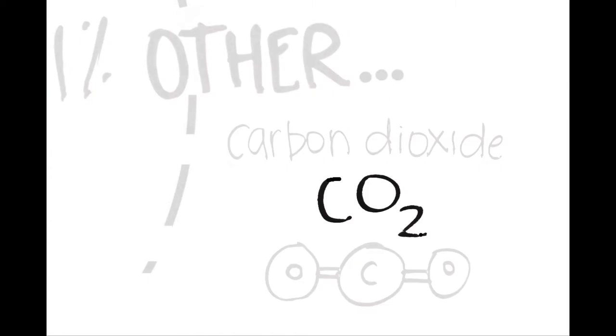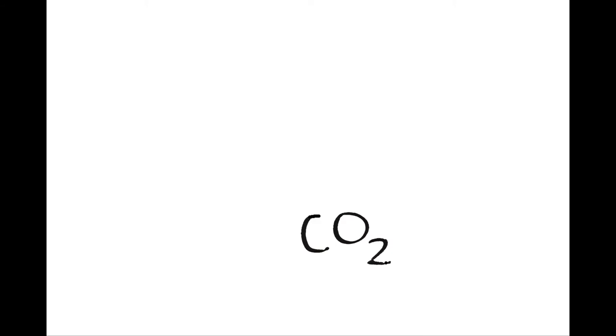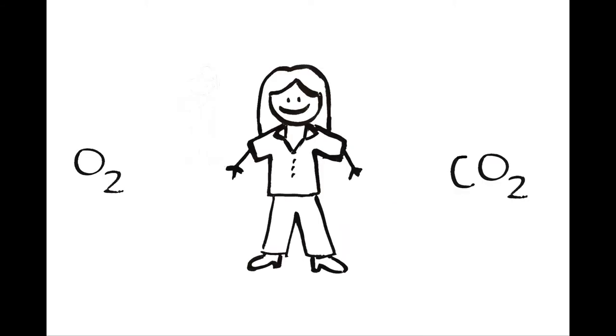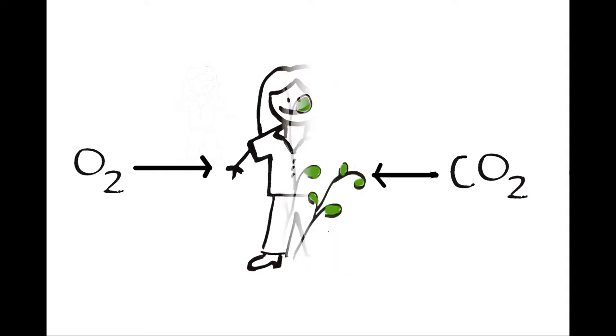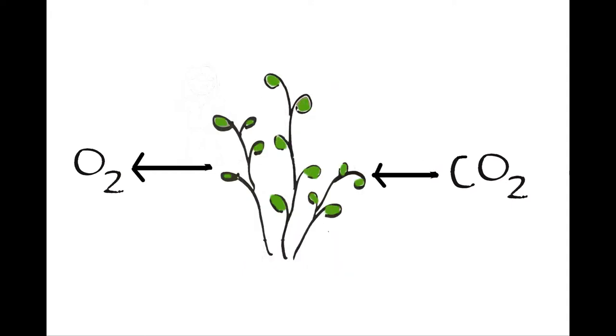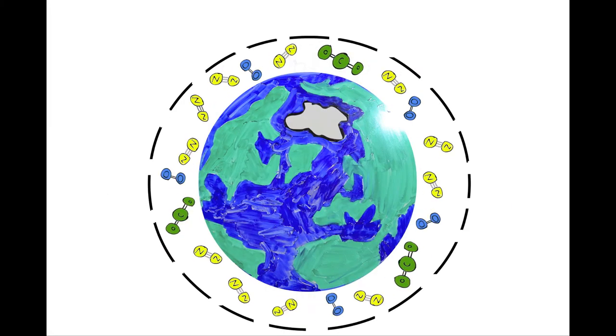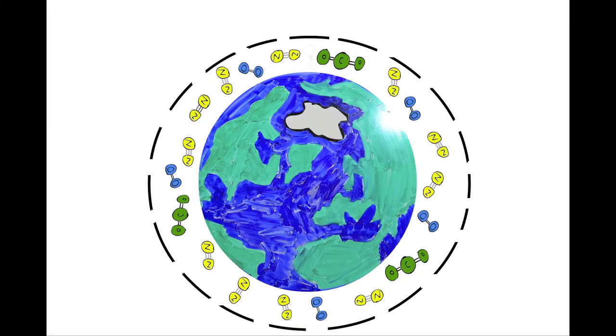You probably know about carbon dioxide from its natural processes. Humans inhale oxygen and exhale carbon dioxide. Plants do the opposite, taking up carbon dioxide and releasing oxygen. But what does it mean to have an atmosphere of mostly nitrogen, oxygen and carbon dioxide?